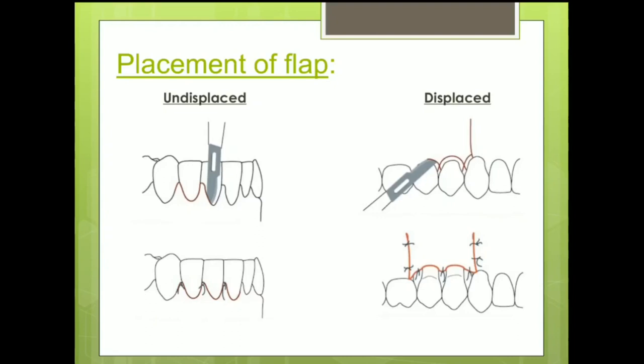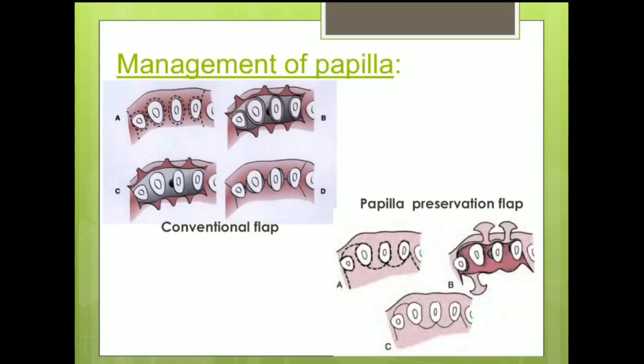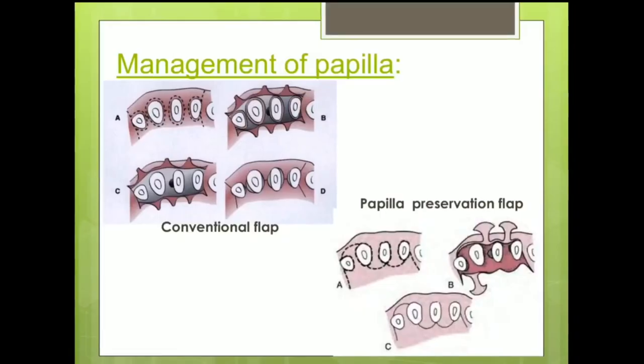In the diagram, we can see an apically displaced flap on the right side. And finally, when viewed from the occlusal aspect, a conventional flap procedure splits the interdental papilla into two halves — buccal and lingual or palatal flaps. Whereas a papilla preservation flap acknowledges the importance of interdental papilla in the aesthetic zone and hence attempts to preserve the papilla by not splitting or dividing it, but rather by incorporating it into either the buccal or palatal flap by giving a semilunar incision near the base of the interdental papilla.